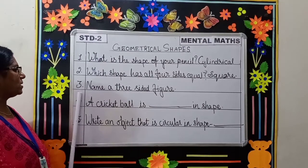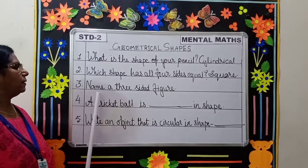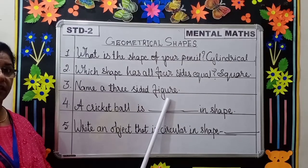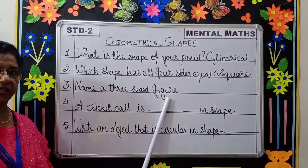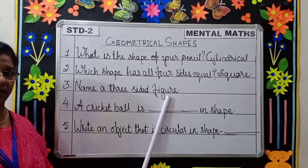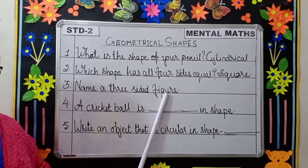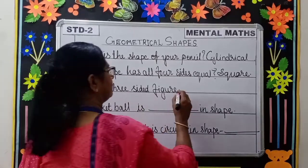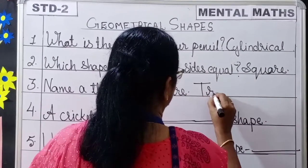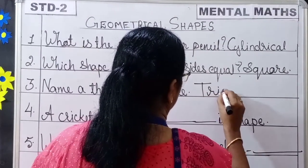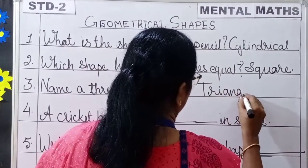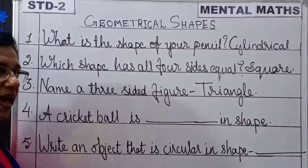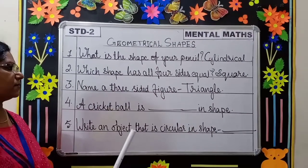Coming to the next question: name a three-sided figure. Three-sided figure — can you say, children? It is a triangle. A triangle has only three sides.